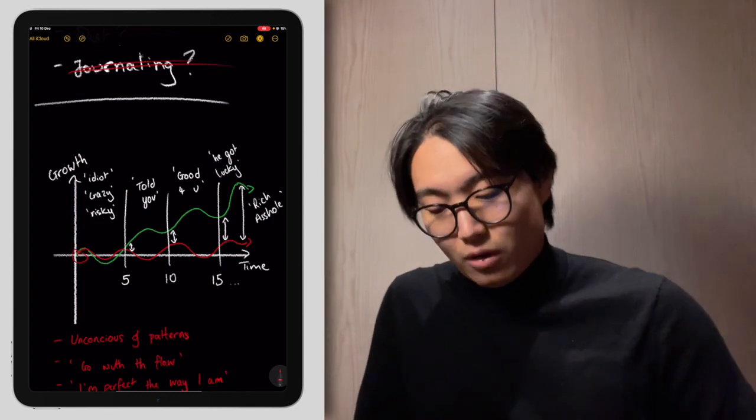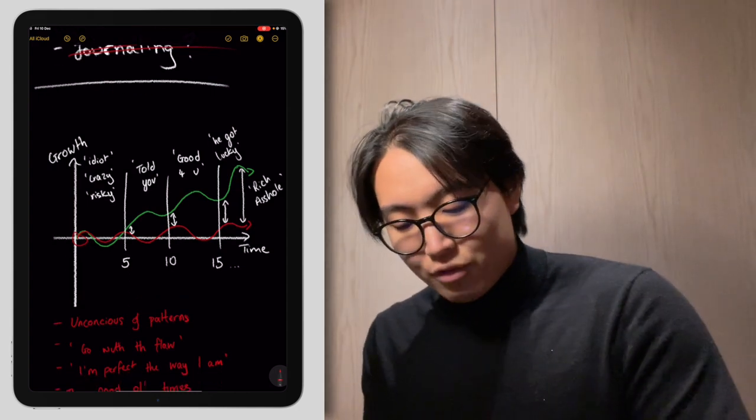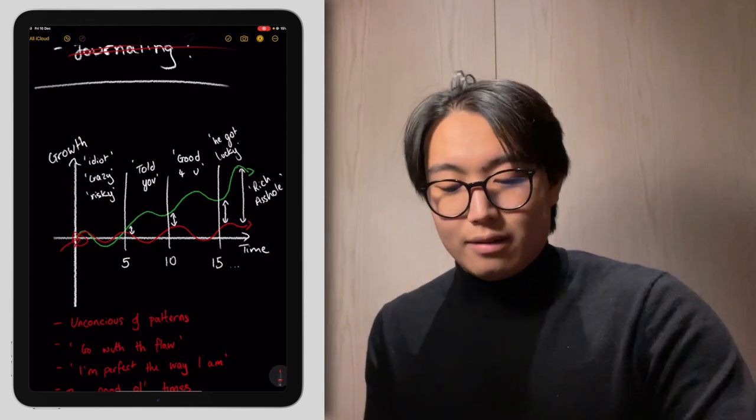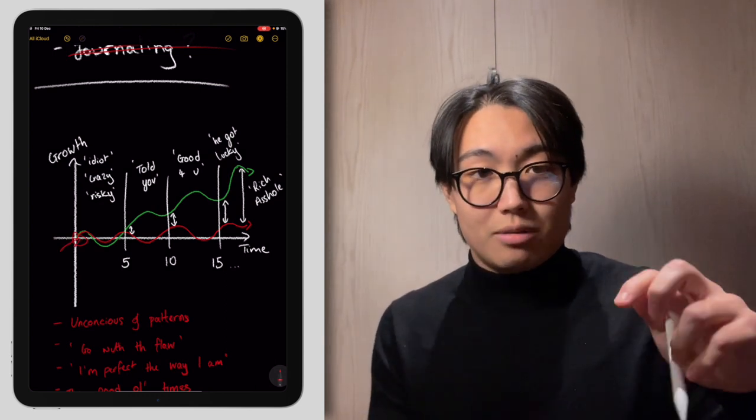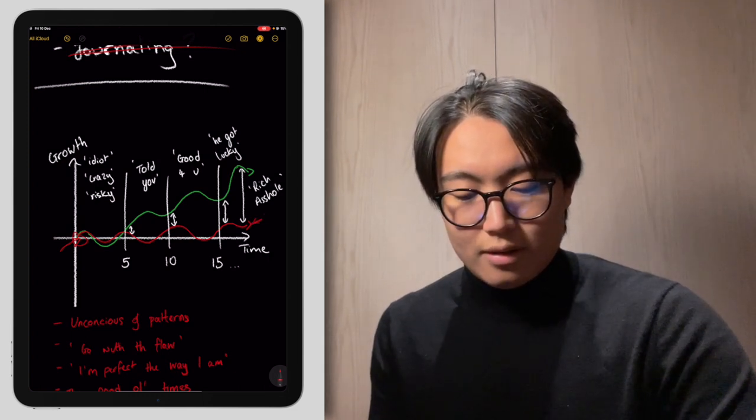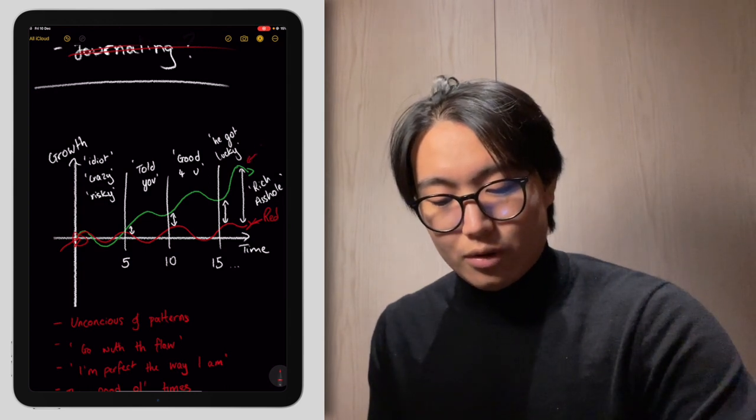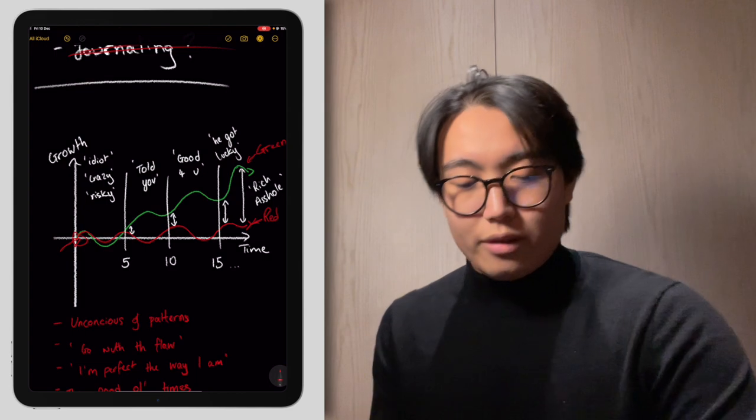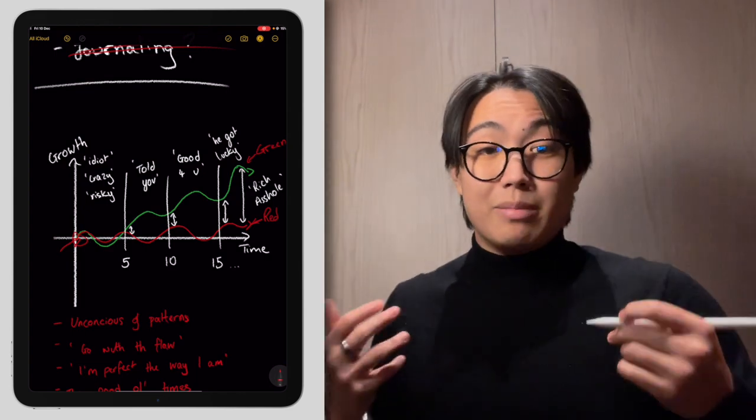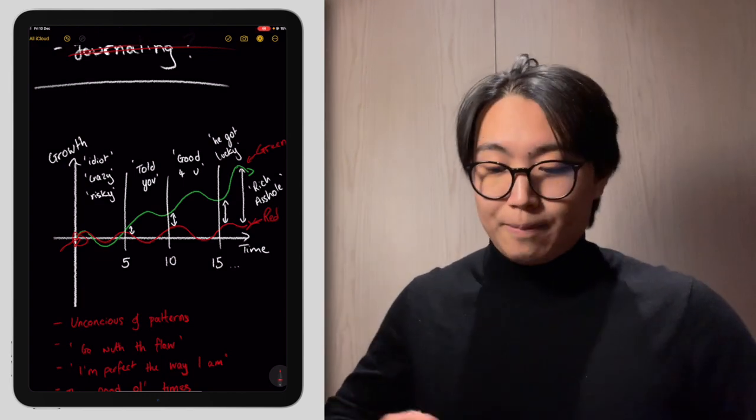So I've modeled it like this assuming that everyone starts at a very similar point which is zero, and there are essentially two types of people. Let's call this line reds and this line greens. Essentially red is supposed to symbolize mediocrity and green is to symbolize exceptional. Everyone should aim to be exceptional.